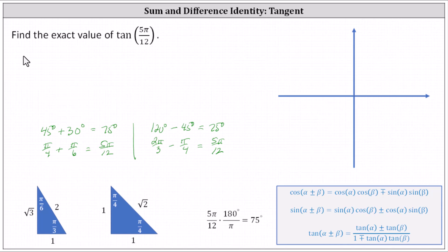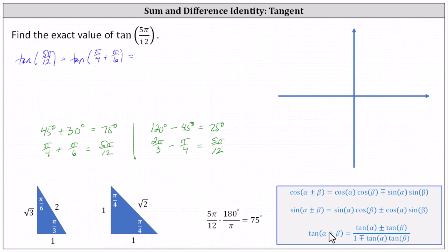To begin setting this up, we have the tangent of five pi divided by 12 equals the tangent of pi divided by four plus pi divided by six. Now we apply the sum identity for the tangent function. Because we have a sum, we use the top sign on the right side, which gives us a sum in the numerator and a difference in the denominator.